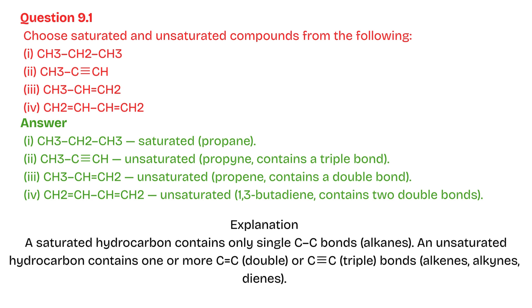Question 9.1: Choose saturated and unsaturated compounds from the following. Explanation: A saturated hydrocarbon contains only single C–C bonds — alkanes. An unsaturated hydrocarbon contains one or more C=C double bonds or C≡C triple bonds — alkenes, alkynes, dienes.